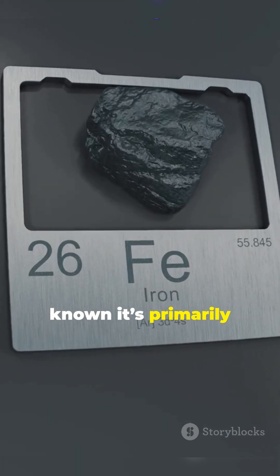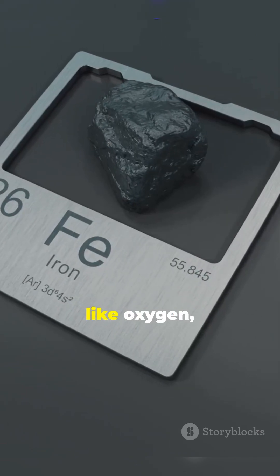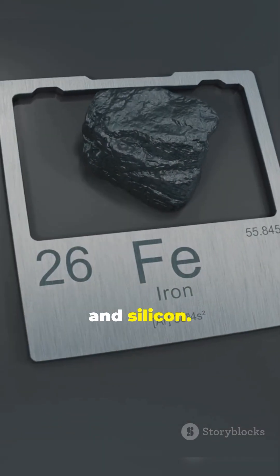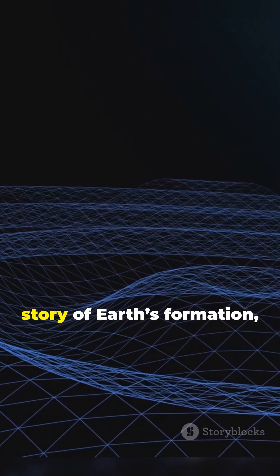Recent studies have also revealed new insights into the materials found in the core. While we've long known it's primarily composed of iron and nickel, researchers have detected traces of lighter elements like oxygen, sulfur and silicon. Understanding these elements is crucial for unraveling the story of Earth's formation, as they may hold clues about the materials that existed in the early solar system.